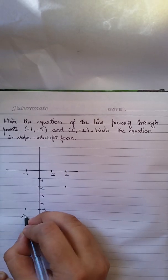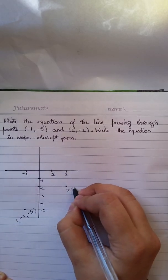I have two points, (-1, -5) and (2, -2).